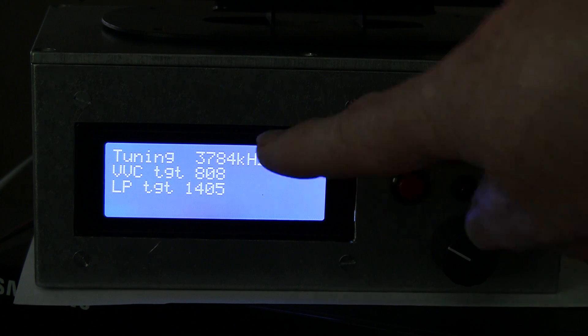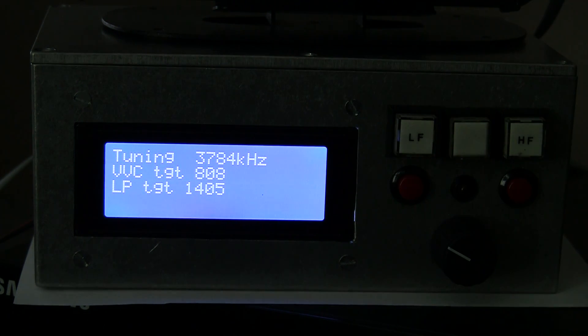It's found the frequency. It's worked out what the target points should be: 808 and 14.05. It's moving the loop to 14.05. It's moving the vacuum variable to 808. Now it's doing a search. Coarse. Position.